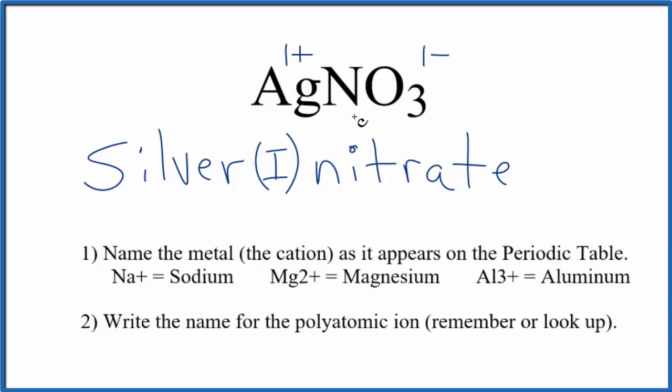Net charge is 0. So the formula for silver nitrate, or silver 1 nitrate, is AgNO3. This is Dr. B with the name for AgNO3. Thanks for watchin'.